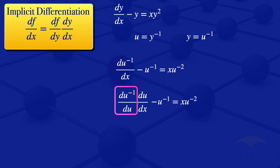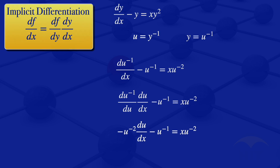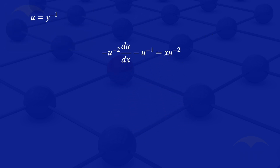The derivative of U to the power minus 1 with respect to U gives us minus U to the power minus 2. So our equation becomes: minus U to the power minus 2 multiplied by the derivative of U with respect to X, minus U to the power minus 1, is equals to X multiplied by U to the power minus 2.